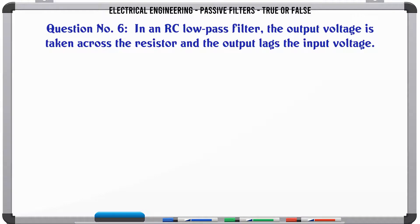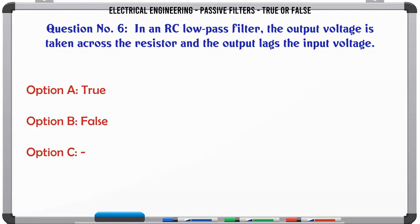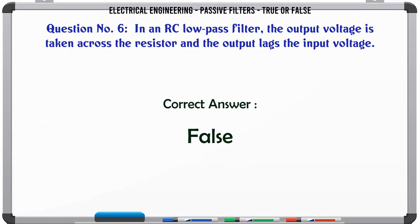In an RC low-pass filter, the output voltage is taken across the resistor and the output lags the input voltage. A. True. B. False. The correct answer is: False.